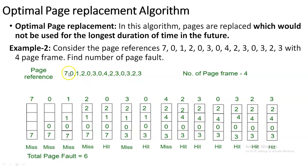The reference string begins with 7, 0, 1, 2. Since there is no problem with inserting the first four strings directly into four empty frames, all four are considered misses. The next string is 0 — zero already exists in the frame, so no page replacement is needed and it is counted as a hit.